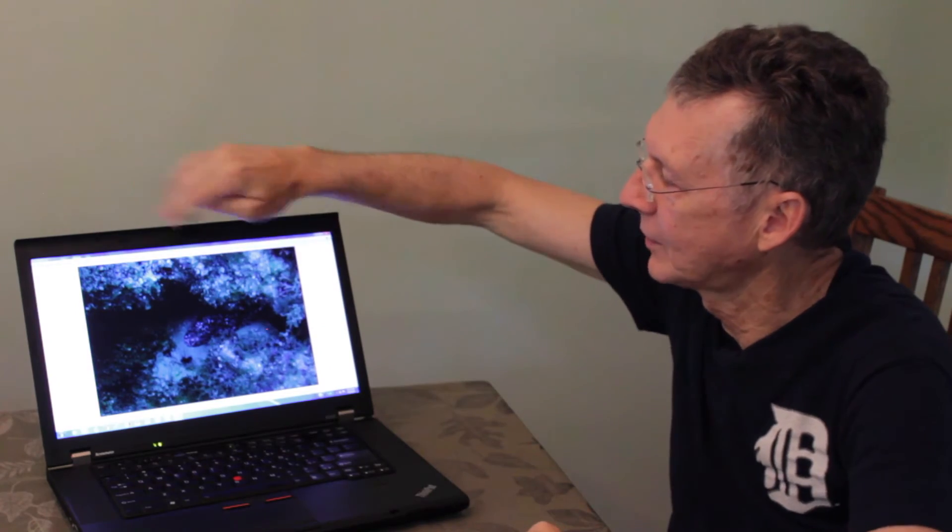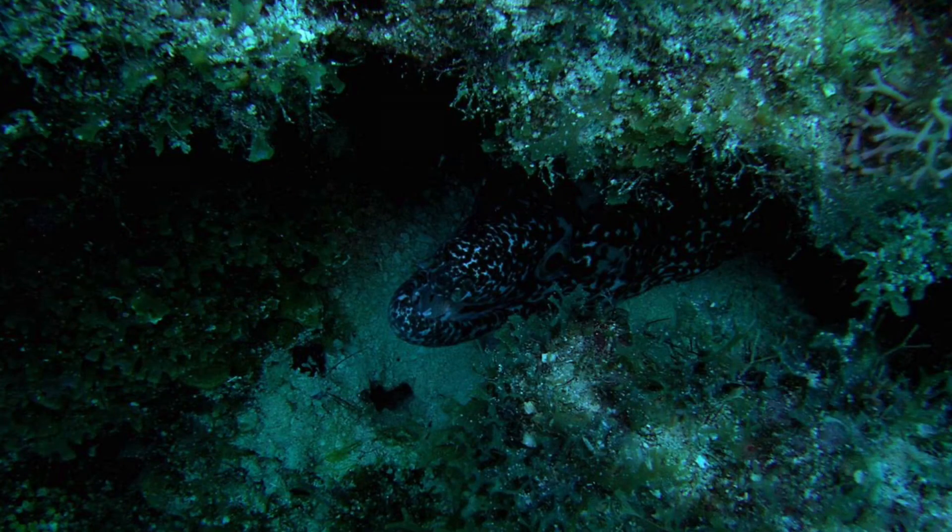Sometimes I'll be taking pictures of something under a ledge and I'm getting my camera down in there, forgetting that the strobe is up here and it's not illuminating the eel. The strobe's up here, it's not going to illuminate the eel. So you have to be mindful of where the subject is, where your camera is, and where the strobe is.